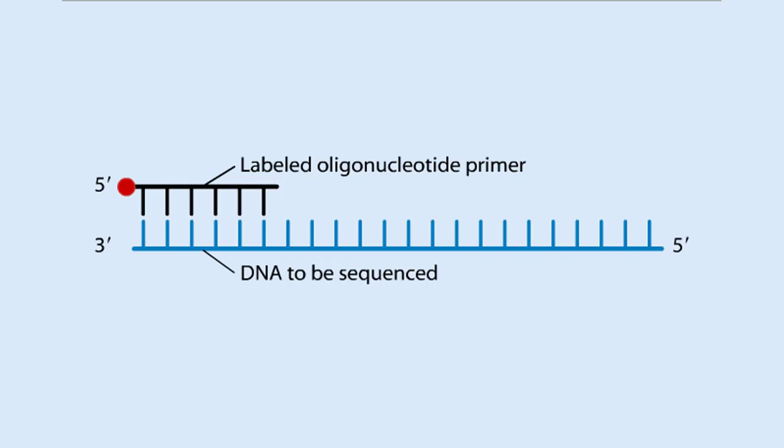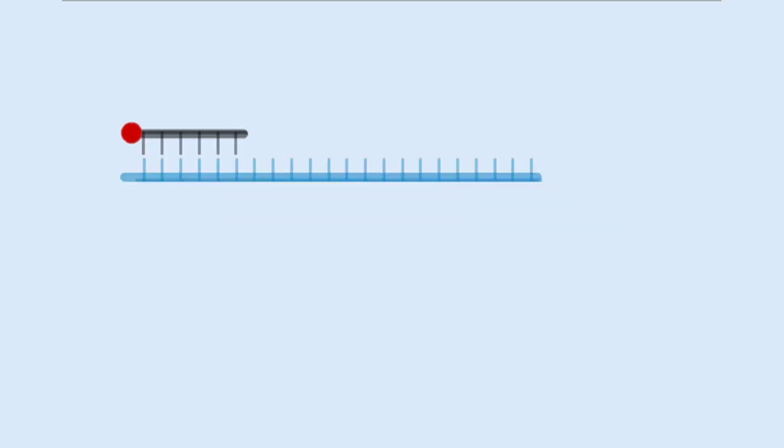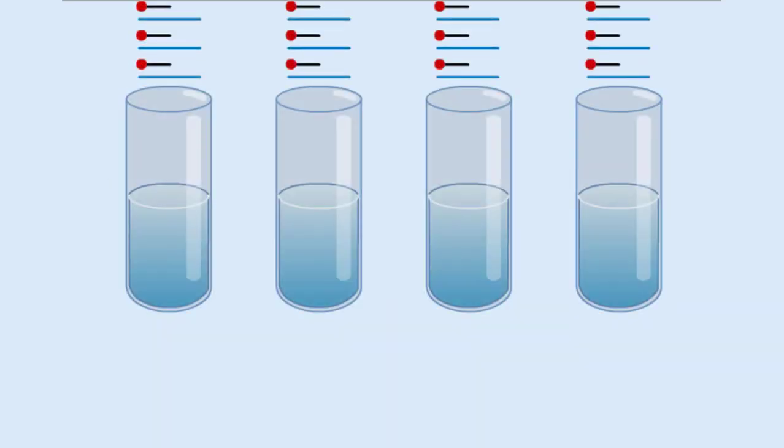A short radio-labeled primer is annealed to the single-stranded DNA to be sequenced. The DNA serves as a template for in vitro DNA synthesis.